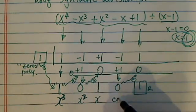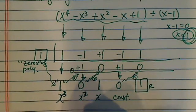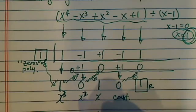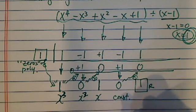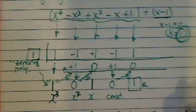And then write the answer. So the answer becomes x to the cube with coefficient of 1. Okay, plus 0 times x squared plus 1 times x plus constant 0 plus the remainder term.